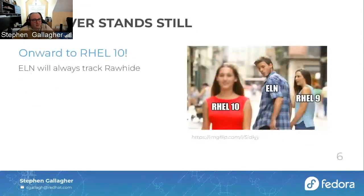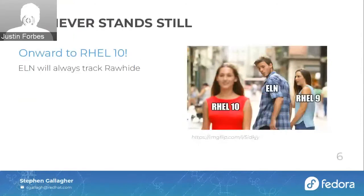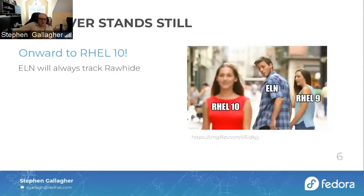ELN will always track Rawhide. We've already moved on to developing RHEL 10 ELN and made some interesting progress. We are experimenting with a variety of things including the x86-64-v3 compiler baseline, new compiler flags related to link time optimization, and monitoring through the content resolver service how our dependency trees are growing or shrinking and trying to keep them headed towards the smaller side. Generally these days we have a compose most days that succeeds.